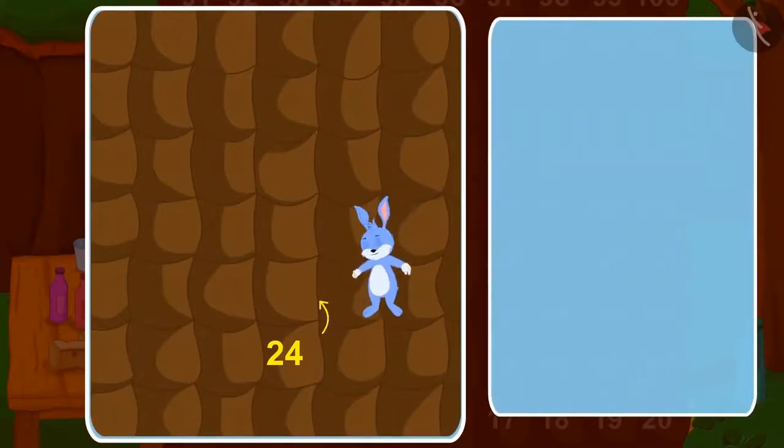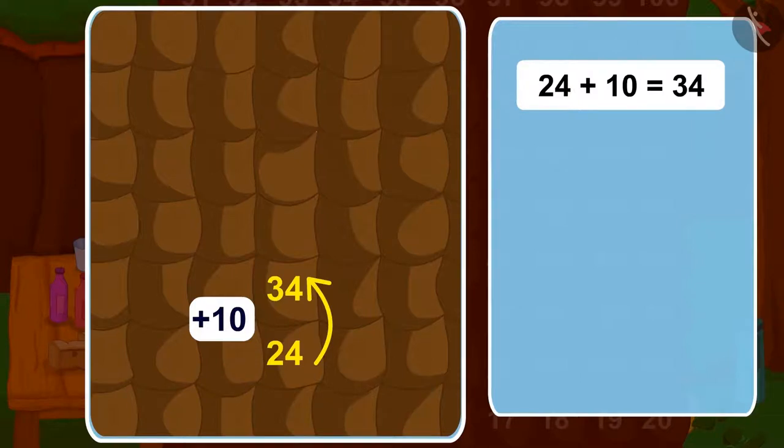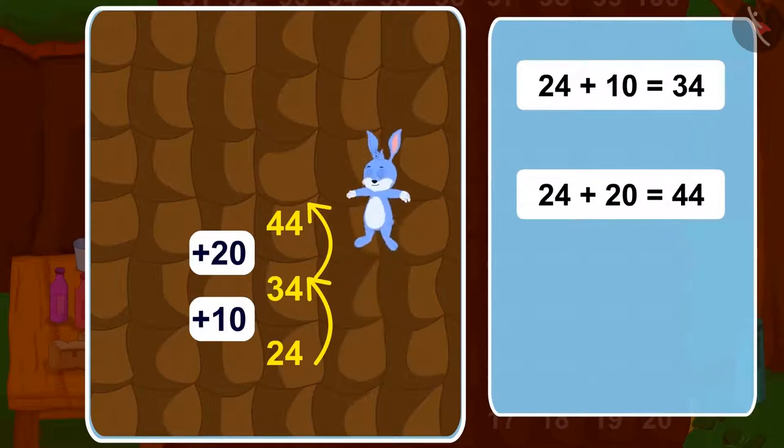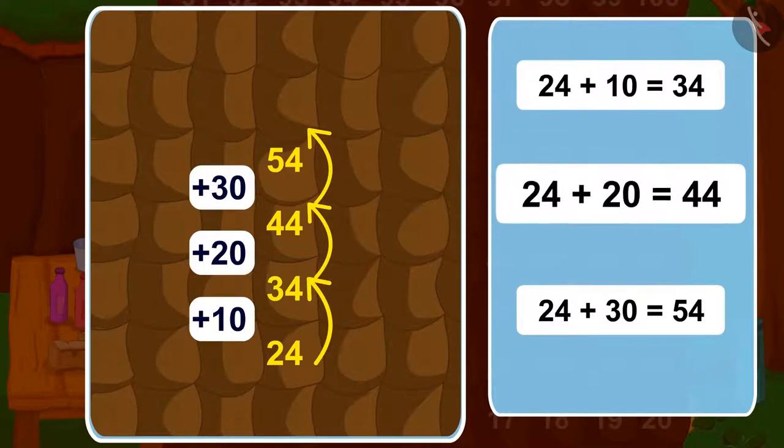In the same way, if we take two jumps above, how many steps will we add? 20. Three jumps up? 30. In this way, one can easily add 10 with every jump up from any room number.